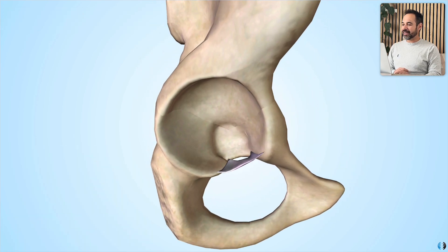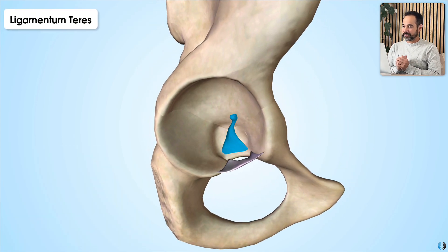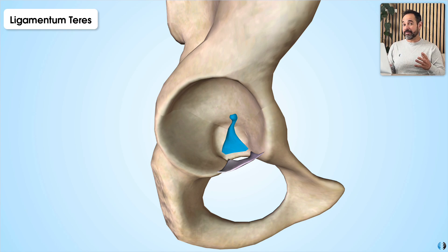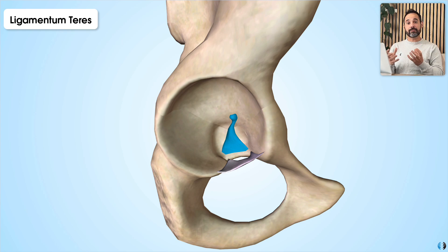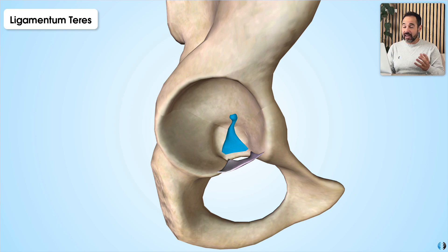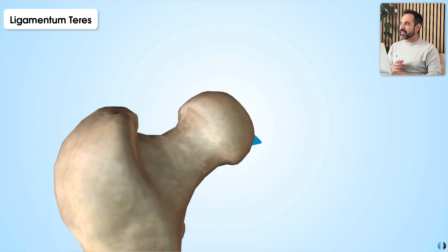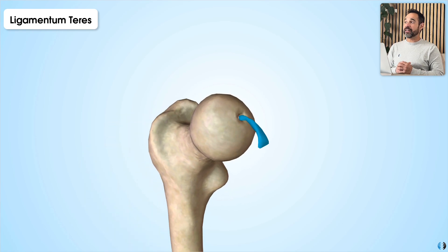The final ligament to mention is the ligamentum teres, also known as the ligament of the head of femur, the round head of femur ligament, or the foveal ligament. Its main role is actually in blood supply, as it contains branches of the obturator artery to supply the head of femur. It originates at the acetabular fossa of the acetabulum and inserts into the head of femur directly at the fovea capitis.